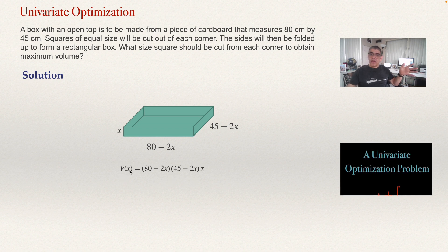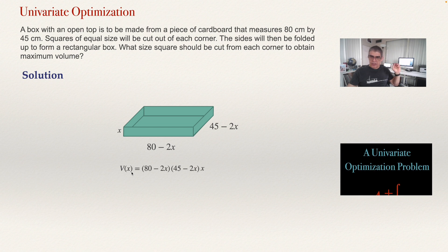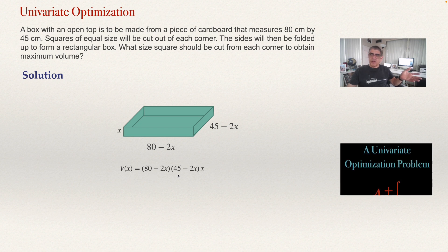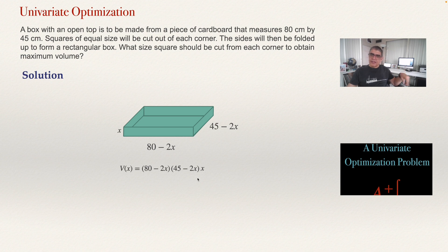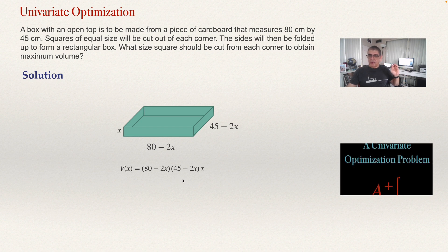You have expressed the volume in terms of the variable and you want to compute the maximum volume. This is the function you need to get the derivative of and make that derivative equal zero. For getting the derivative you can use the product rule twice because there are two products here. Or better, make the full product first and then get the derivative of a polynomial. You will also notice that there is a constraint on the domain of this function.